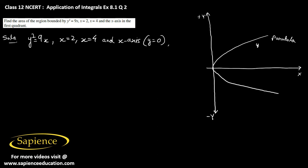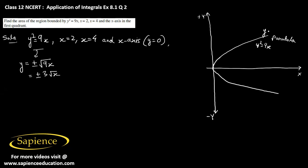The equation is y squared equals 9x. If we solve this, we get y equals plus or minus root of 9x, which equals plus or minus 3 root x. The branch above the x-axis has the equation y equals plus 3 root x, and the branch below the x-axis has y equals minus 3 root x.